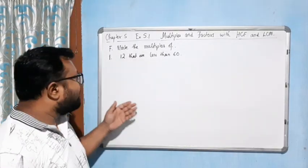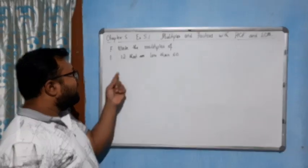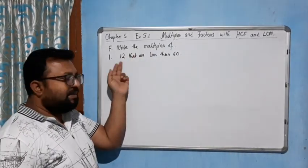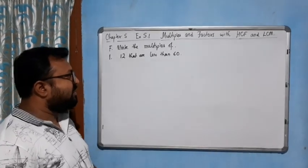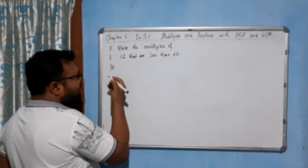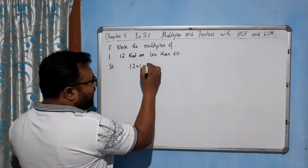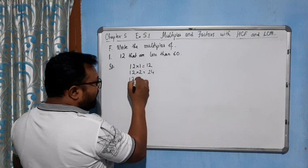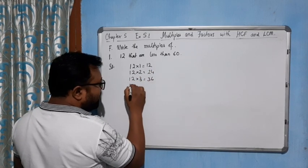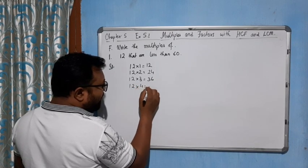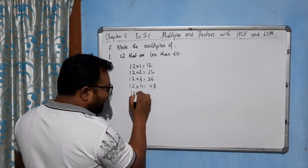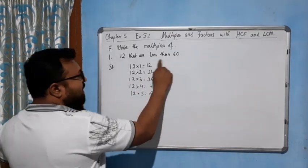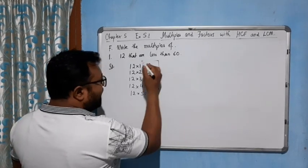Now come to the next question, question F: write the multiples of 12 that are less than 60. Let's see the solution. 12 into 1 equals 12, 12 into 2 equals 24, 12 into 3 equals 36, 12 into 4 equals 48, 12 into 5 equals 60. The question says less than 60, so we will leave 60 out.